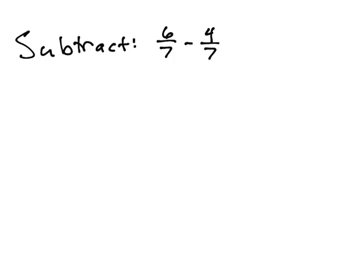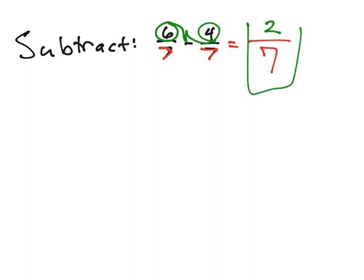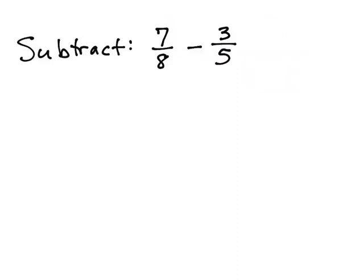Let's subtract 6 sevenths minus 4 sevenths. Again, I see my denominator is the same, so my 7 holds strong. And then I'm looking at the top. 6 minus 4 is 2. 2 and 7 share no common factors, so my answer is simply 2 sevenths.